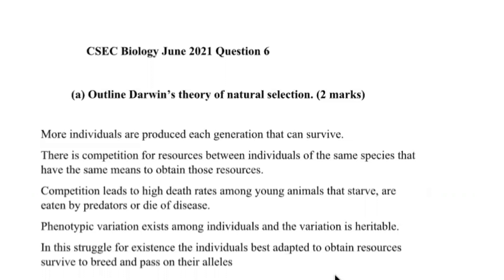In his theory, he postulated that more individuals are produced in each generation than can survive. He also noted that there is competition for resources between individuals of the same species that have the same means to obtain these resources. He postulated that phenotypic variation exists among individuals and the variation is heritable. And lastly, there is a struggle for existence and the individual best adapted to the environment will obtain the resources, survive, reproduce, and pass on their alleles to successive generations.